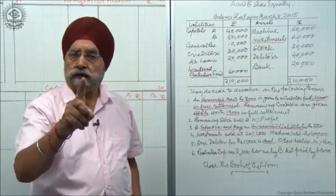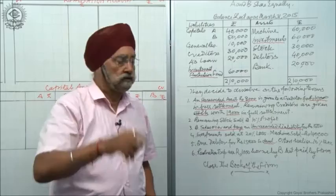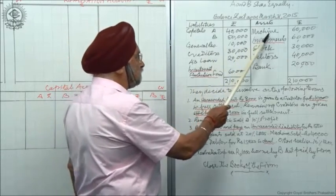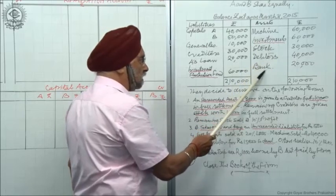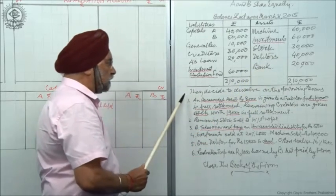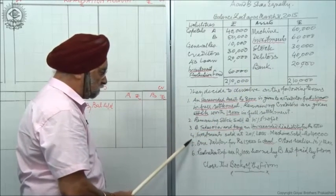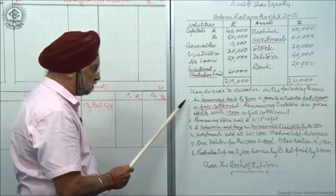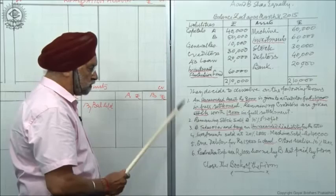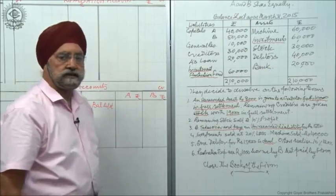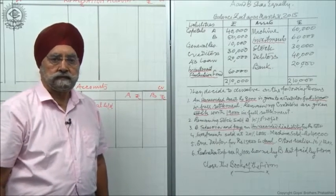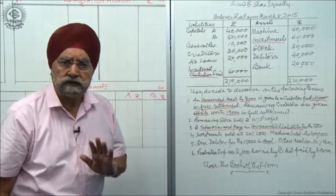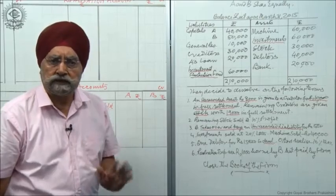Please remember: when both are there — investment and investment fluctuation fund — both go to the realization account, one on the debit side and the other on the credit side. That was one new thing in this problem. Coming to the asset side: machine, stock, debtors and bank are common items. Now there are 6 adjustments. Adjustments number 1 and 2 are special ones — a little tricky, but if you read them carefully and understand the idea behind them, you will be able to do this.